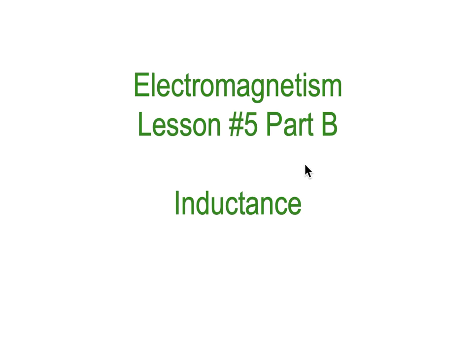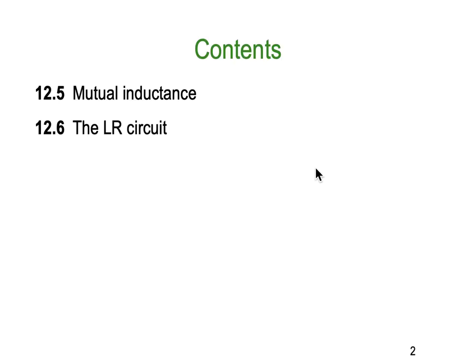Hello, Dr. Kim here with Electromagnetism lesson 5 part B, as we continue in the world of inductance. If you're following along in the textbook, it's section 12.5 and 12.6 — mutual inductance and the LR circuit.